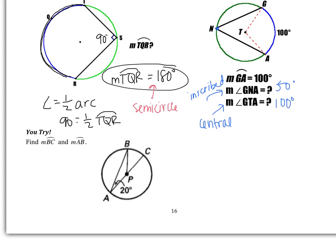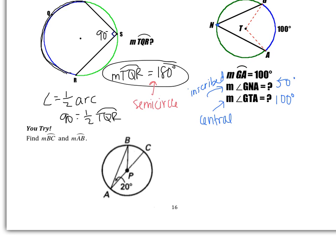Moving on. Here's one for you to try. I'm giving you the measure of angle BAC to be 20 degrees. You have to find arc BC and arc AB. Pause the video right now and try it on your own, please.